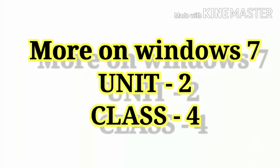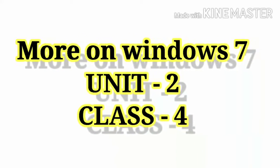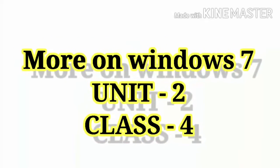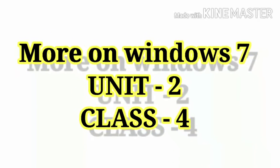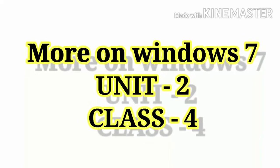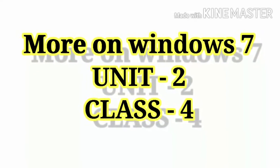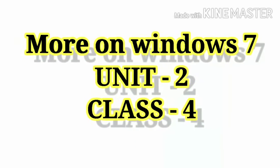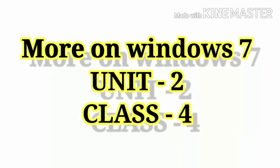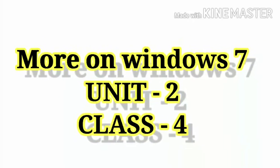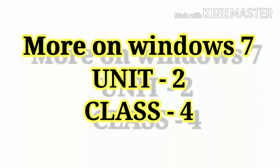Hello, my dear students, welcome to your computer class. Today we need to learn more about Windows 7. Windows 7 is an operating system. An operating system is the most important software for a computer system — without it, a computer cannot operate. Operating systems include DOS, Linux, Windows, and Mac OS. The most popular is Windows, and we have many versions: Windows XP, Windows Vista, Windows 7, Windows 8, Windows 8.1, and Windows 10. Today we will discuss Windows 7.